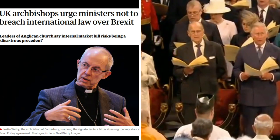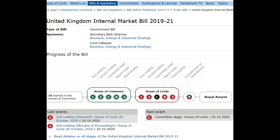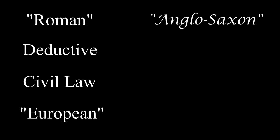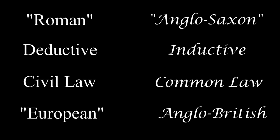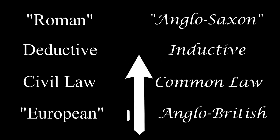My argument is that imbued in the internal market bill example, and really all as regards Brexit, is a greater conflict between two broad opposing ways of seeing and doing things. On one hand you have the Roman way of law — the deductive way — which becomes what we call civil law, the broad European form. This form takes abstract or general principles and applies them to specifics. On the other hand you have the Anglo-Saxon way — the inductive way — manifested in common law, the English and UK way. This form takes specific examples and precedent and applies them to new cases.